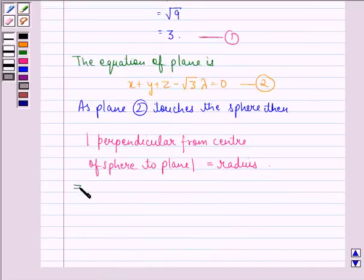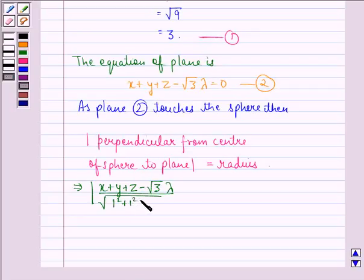This implies |x + y + z - √3λ| / √(1² + 1² + 1²) at the point C(1, 1, 1) is equal to 3.